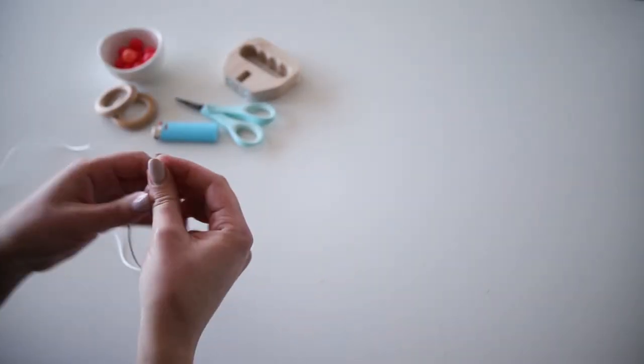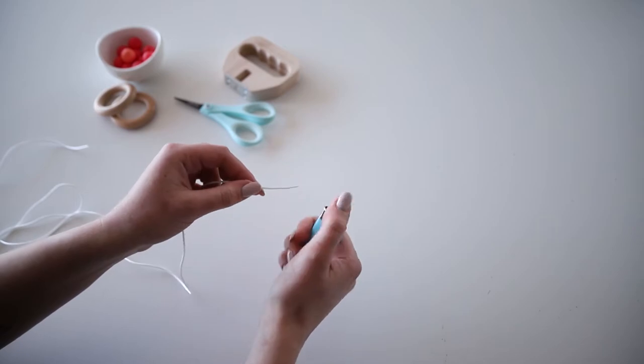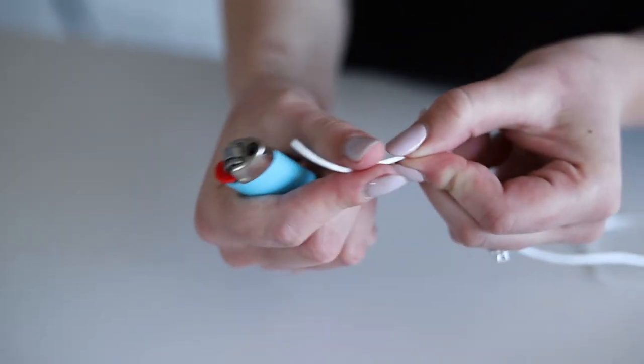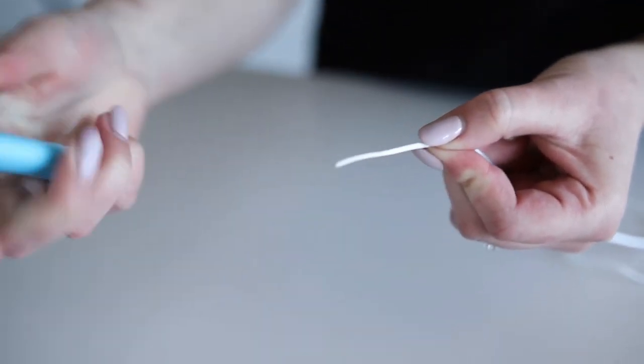First burn one end of the string. I usually slightly burn about an inch of the cord to make it nice and firm which prevents any fraying when you begin beading and it makes it super easy to slip the cord through the beads.